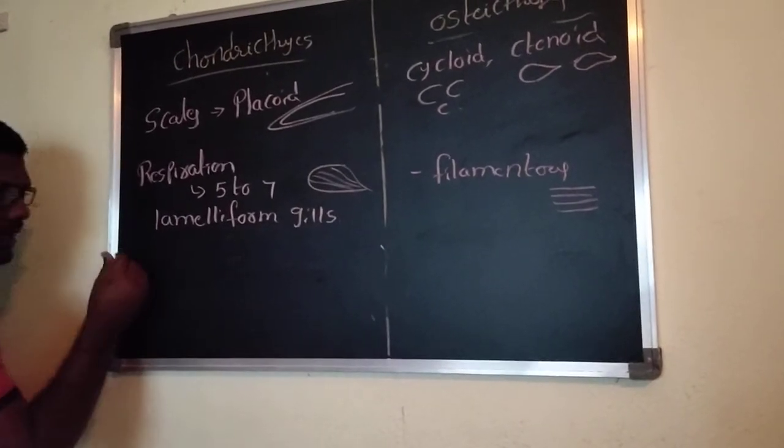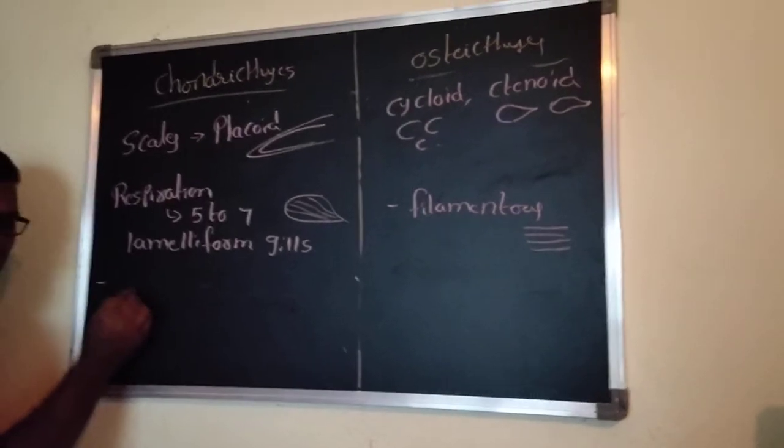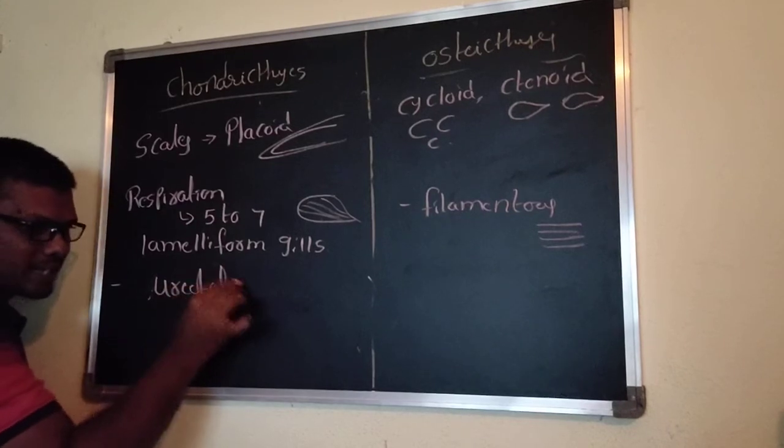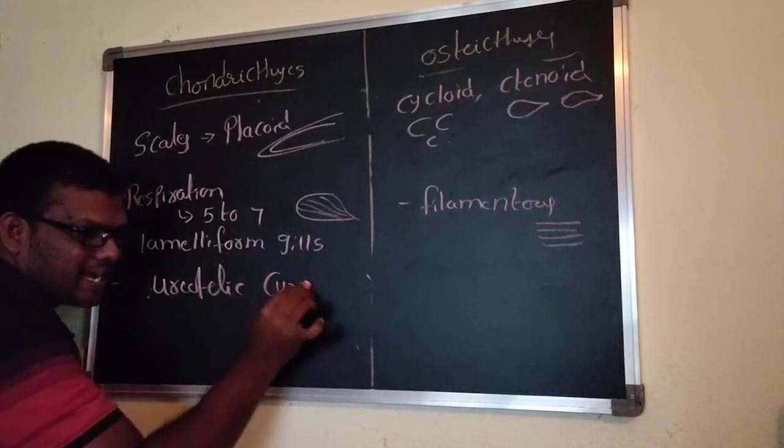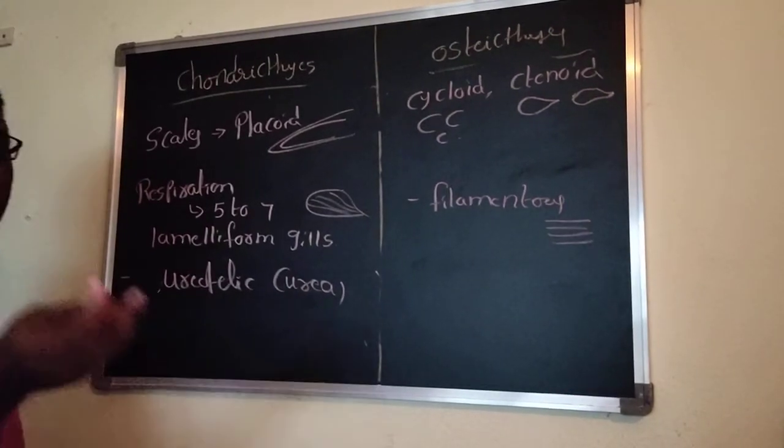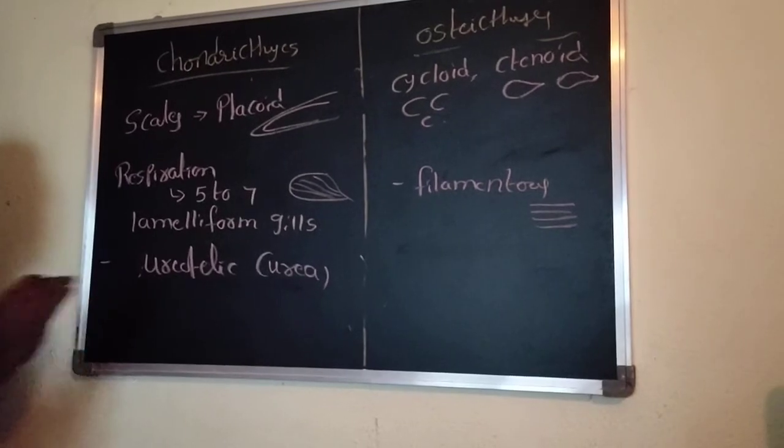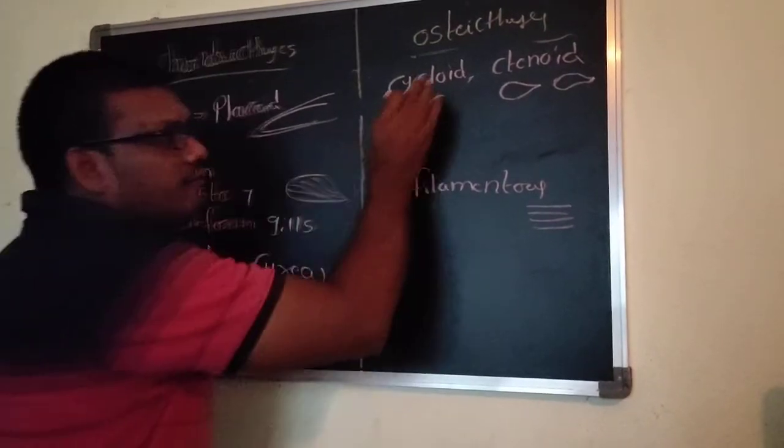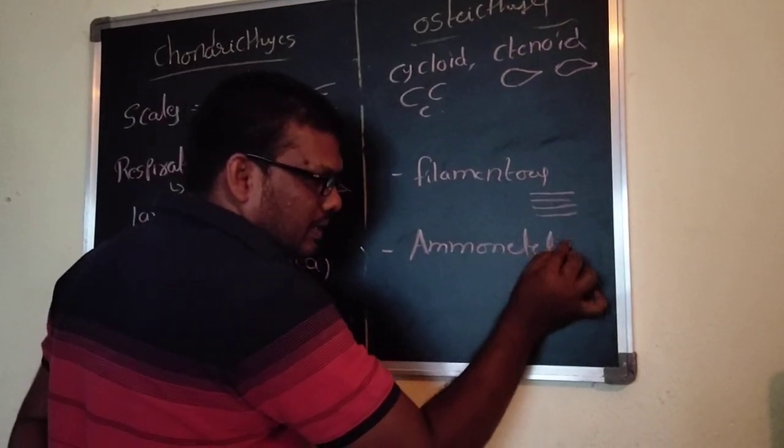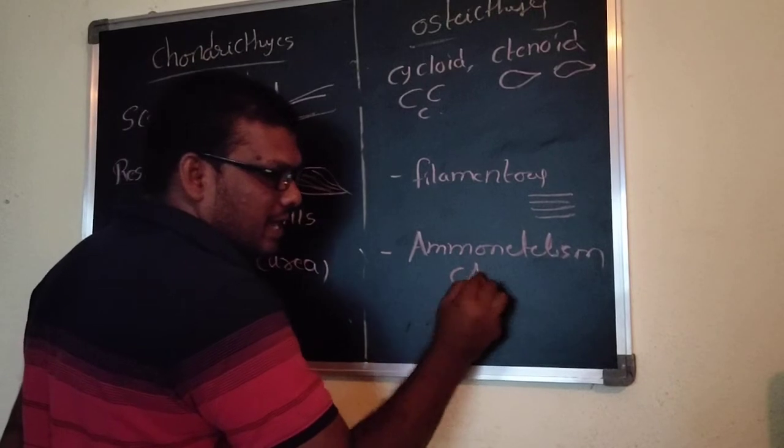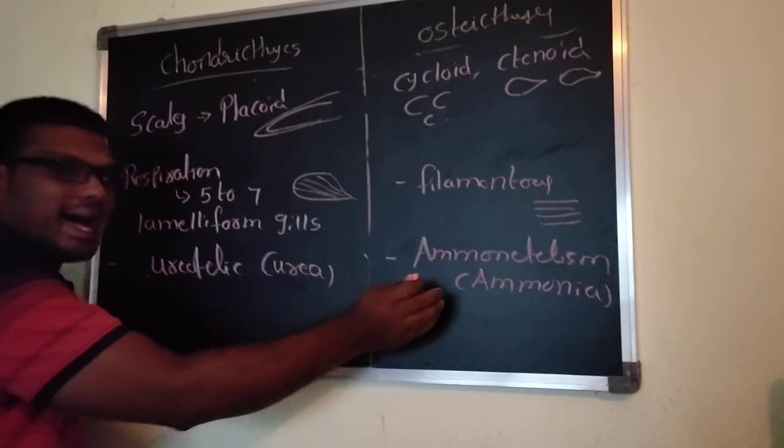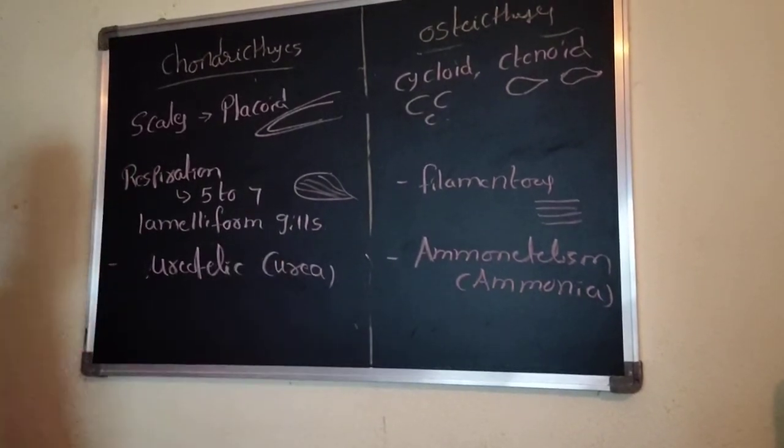Regarding excretory material, Chondrichthyes are ureotelic. Ureotelic means the excretory material is urea. For us also, mammals, the excretory material is urea. For bony fishes, they are ammonotelic. The excretory material is ammonia. Ammonia is highly toxic in nature compared to urea.